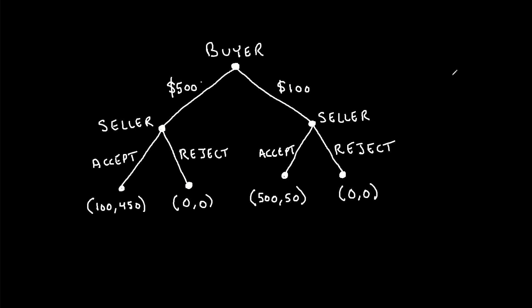So for example, in the scenario where the buyer offers $500 for the product and the seller accepts that offer, the buyer receives a payoff of $100. So the buyer, in other words player one, the first person to make a move in this game, they get this first value as their payoff, and the seller would get $450 as their payoff.